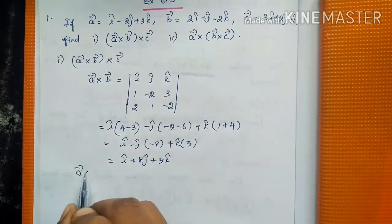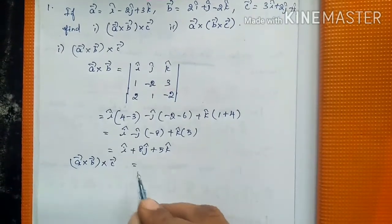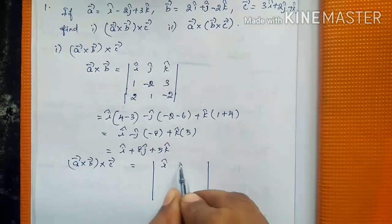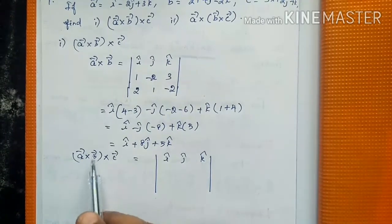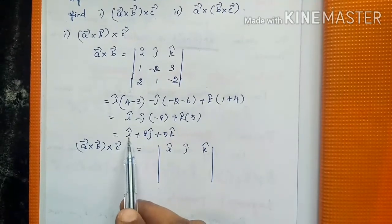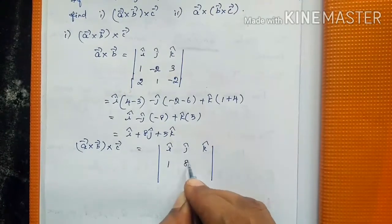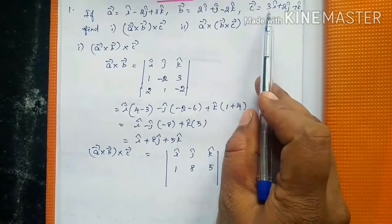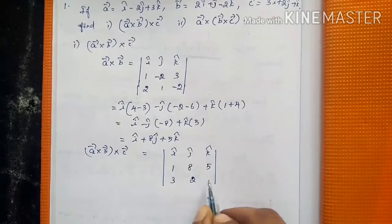Now we have to find (A×B)×C. Again we use the determinant form. The first row is î, ĵ, k̂. The second row takes the components of A×B, which are 1, 8, 5. For C vector, the components are 3, 2, 1.